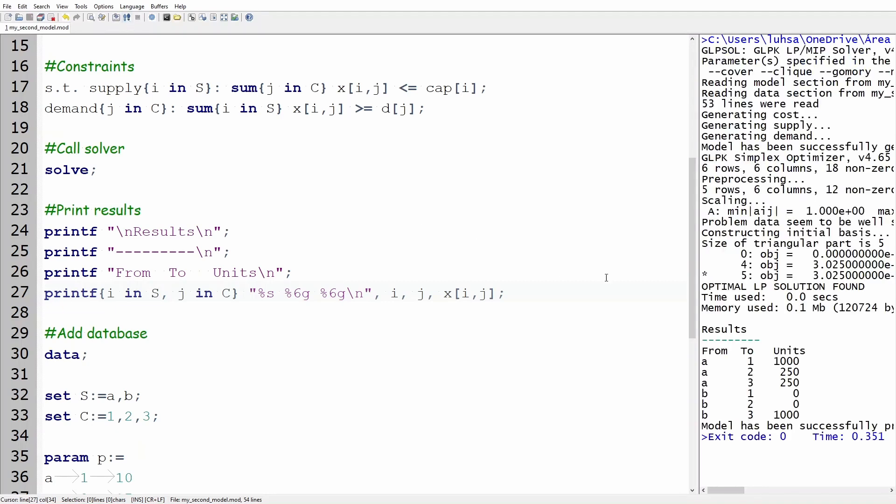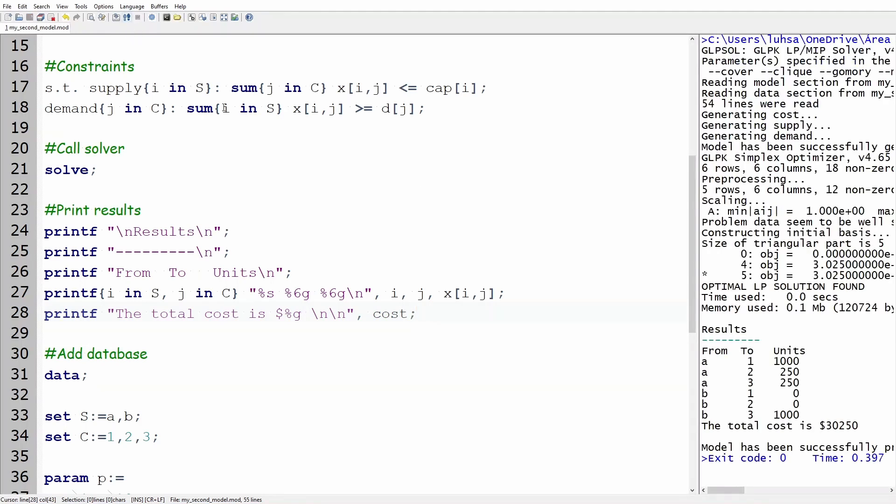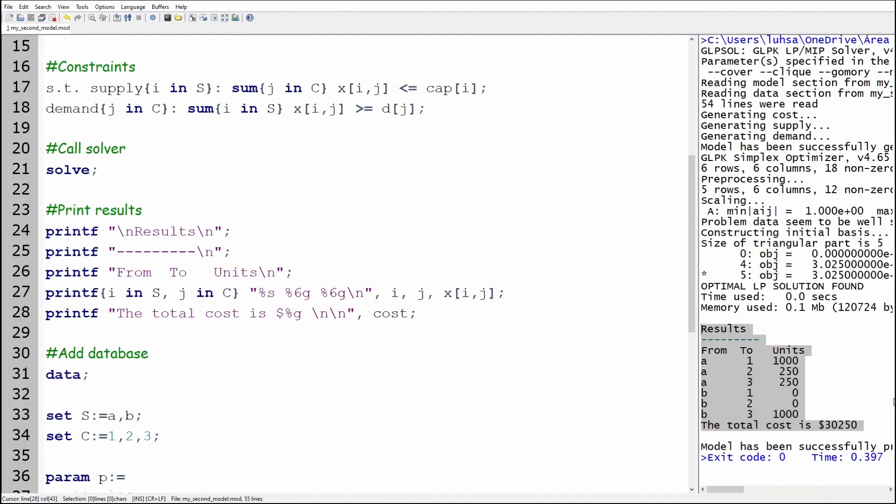Now that we have a table we should print the total cost. Write printf quotation mark the total cost is dollar sign percentage g backslash n backslash n quotation mark comma cost semicolon. Rerun the model and voila! We are displaying the results in a user-friendly format.